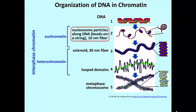The 10 nanometer filament coils up to form a 30 nanometer fiber. The 30 nanometer fiber, in turn, coils again to form looped domains, which are actually loops of DNA protruding from a protein-rich scaffold in the center. And I'll have a photograph to show you what that is.